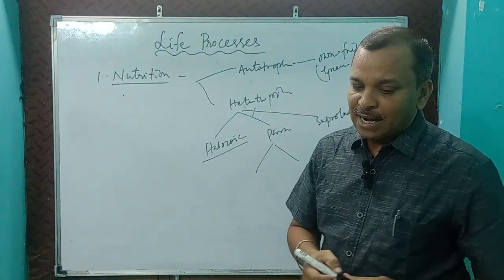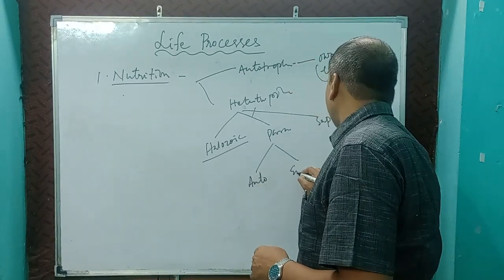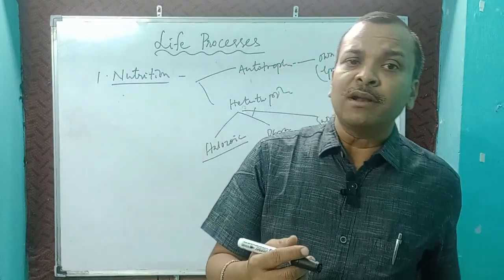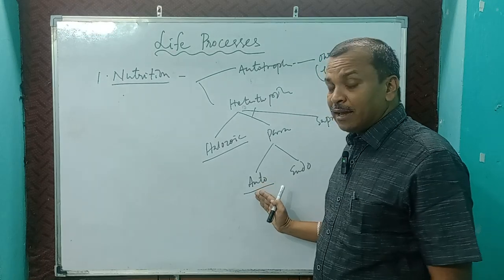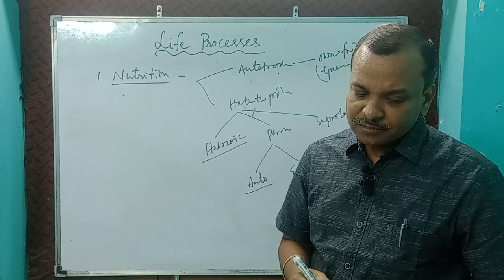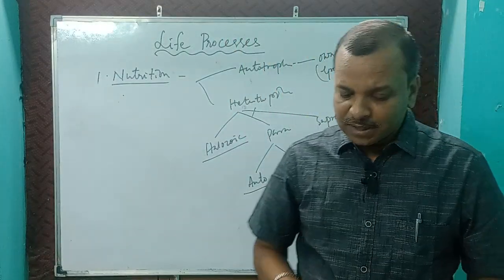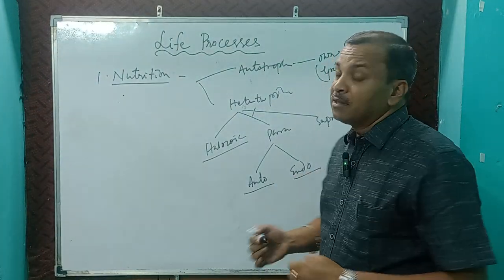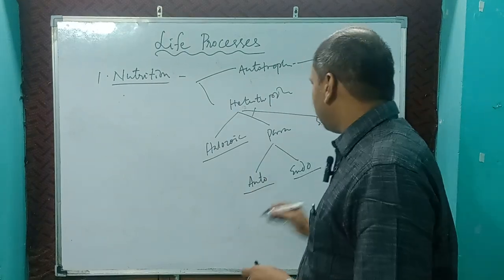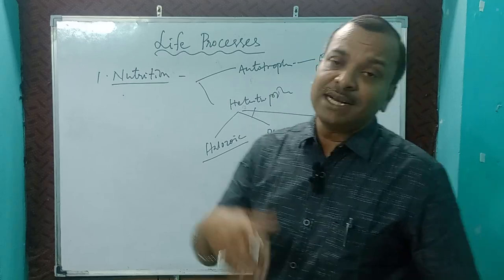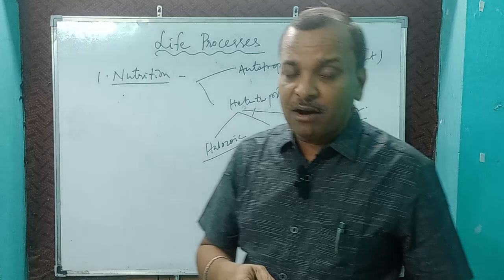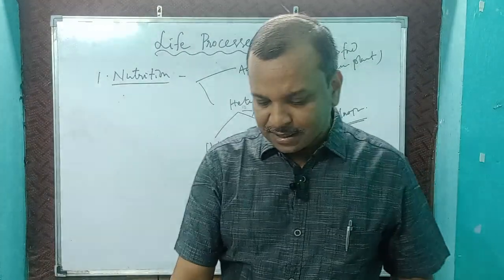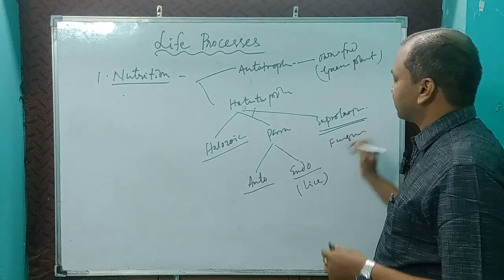Parasitic means those who depend upon others — a host. There are two types of parasites: endoparasitic, present inside the body of the host like viruses, and ectoparasitic, present outside the host cell — for example, lice. Saprophytic means they also depend upon dead plants and dead animals. Example: fungus.